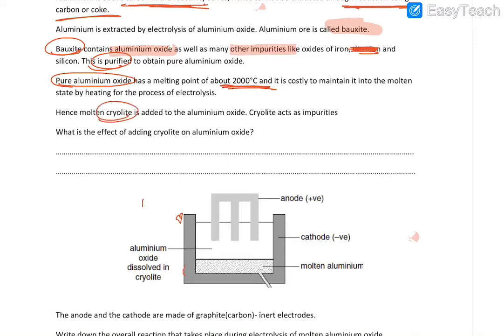Cryolite is going to act as an impurity. It's going to lower the melting point of aluminum oxide so that you don't have so much electrical energy spent in melting it. So we need it to be molten. If its melting point is too high, you're going to use a lot of electrical energy to melt it. So we add cryolite to it in order to lower its melting point.